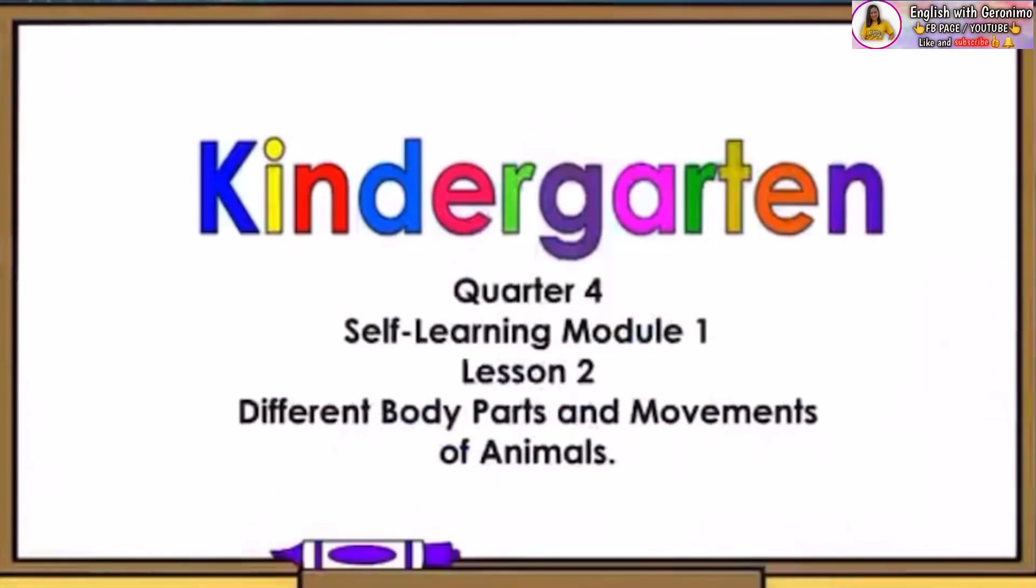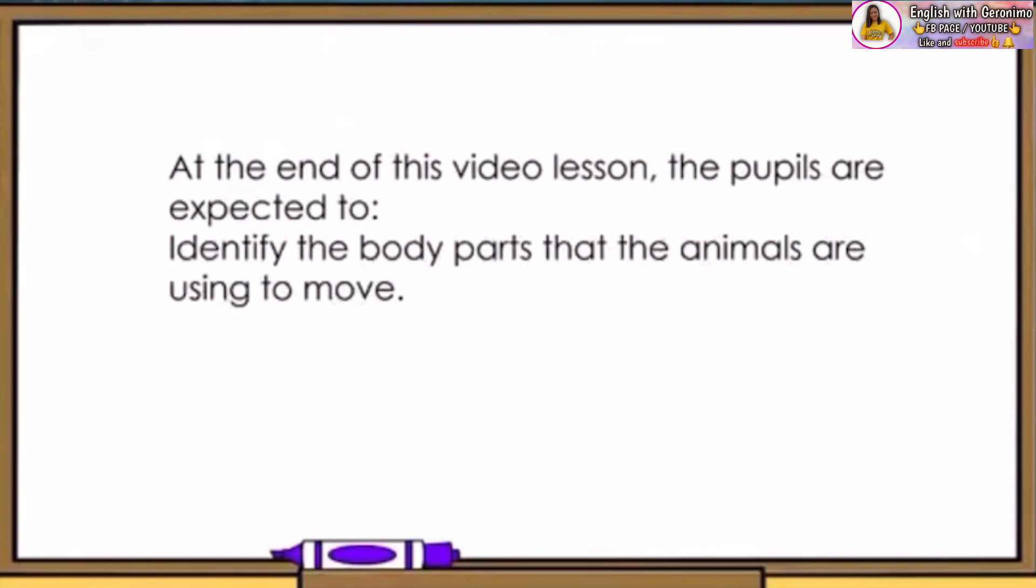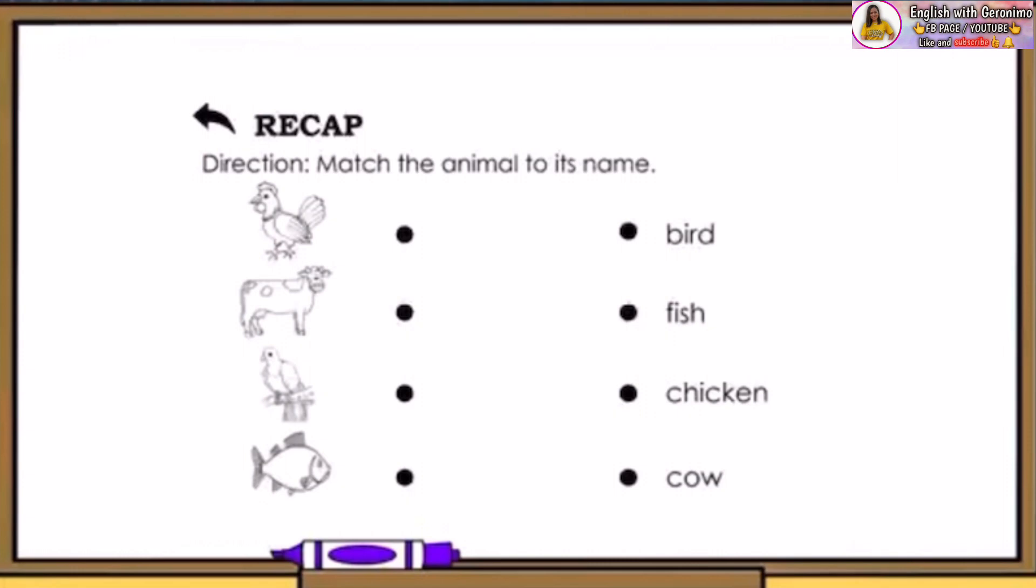Hello kids! Welcome to our School at Home class in Kindergarten. We are now in the 4th quarter, Week 1, Lesson 2, Different Body Parts and Movements of Animals. Listen attentively kids, so at the end of this video lesson, you will be able to identify the body parts that the animals are using to move.